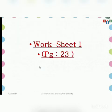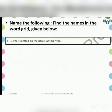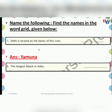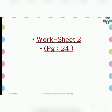Worksheet one is on page number 23 of your workbook. The first worksheet asks you to name the following and find the names in the word grid given below. Delhi is located on the bank of which river? The answer is Yamuna — you have to find it in the word grid box. The longest beach in India is Marina Beach. I have solved a few examples for you; the rest you will do yourself.